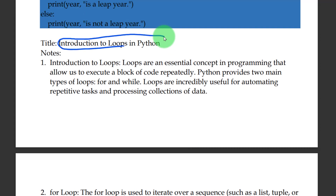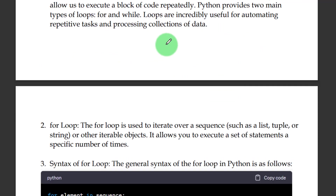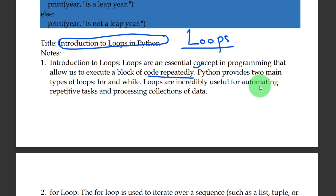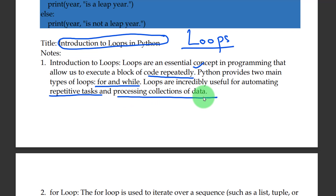Introduction to loops. Loops are essential concepts in programming that allow us to execute a block of code repeatedly. Python provides two main types of loops: for and while. Loops are incredibly useful for automating repetitive tasks and processing collections of data.